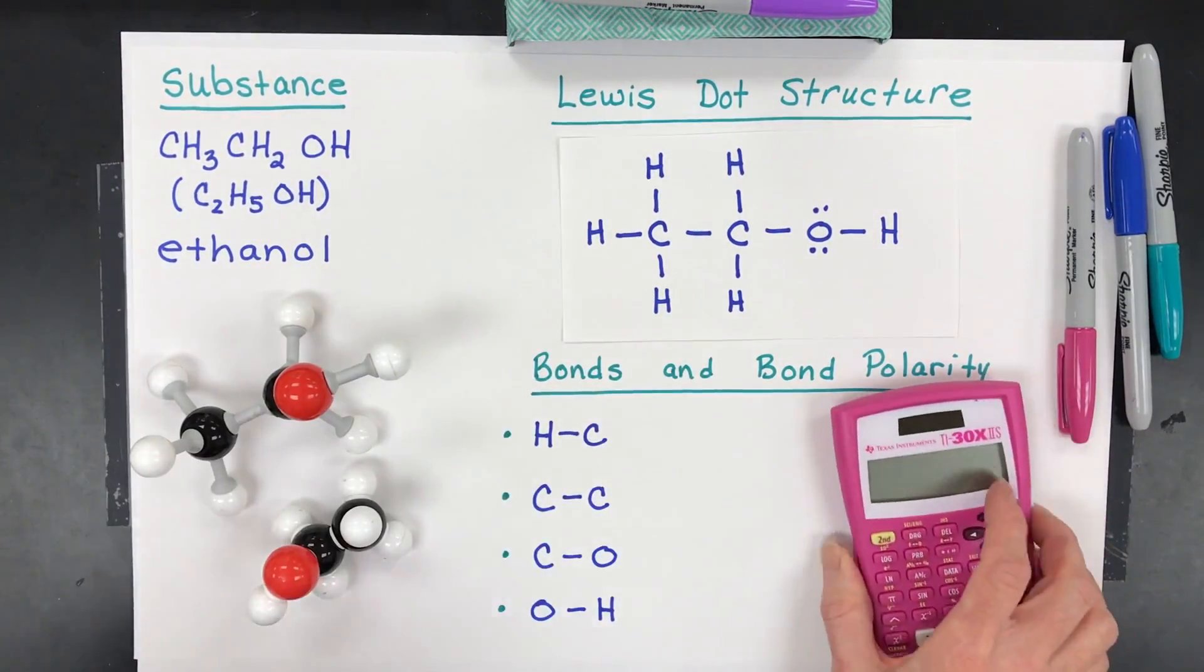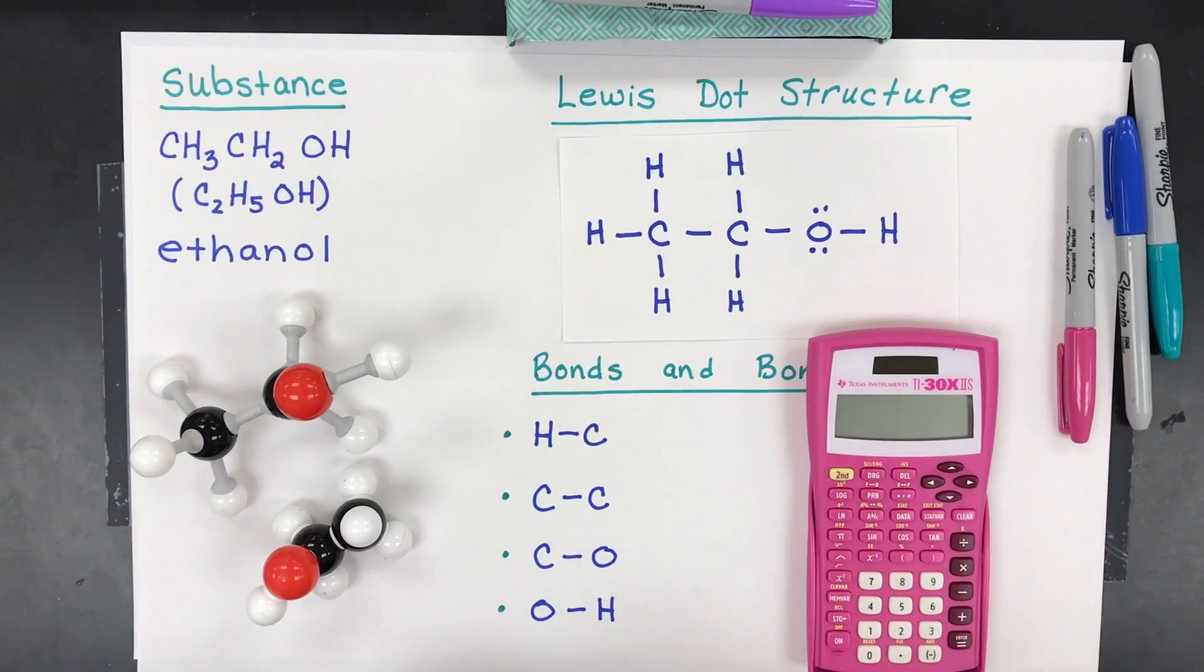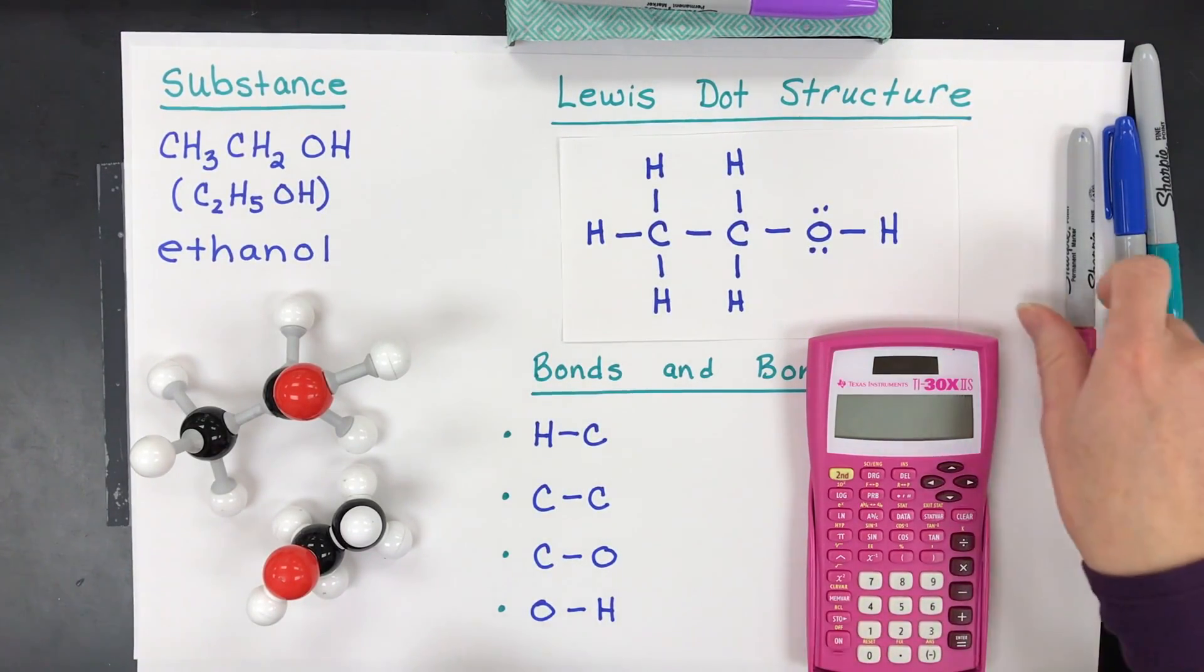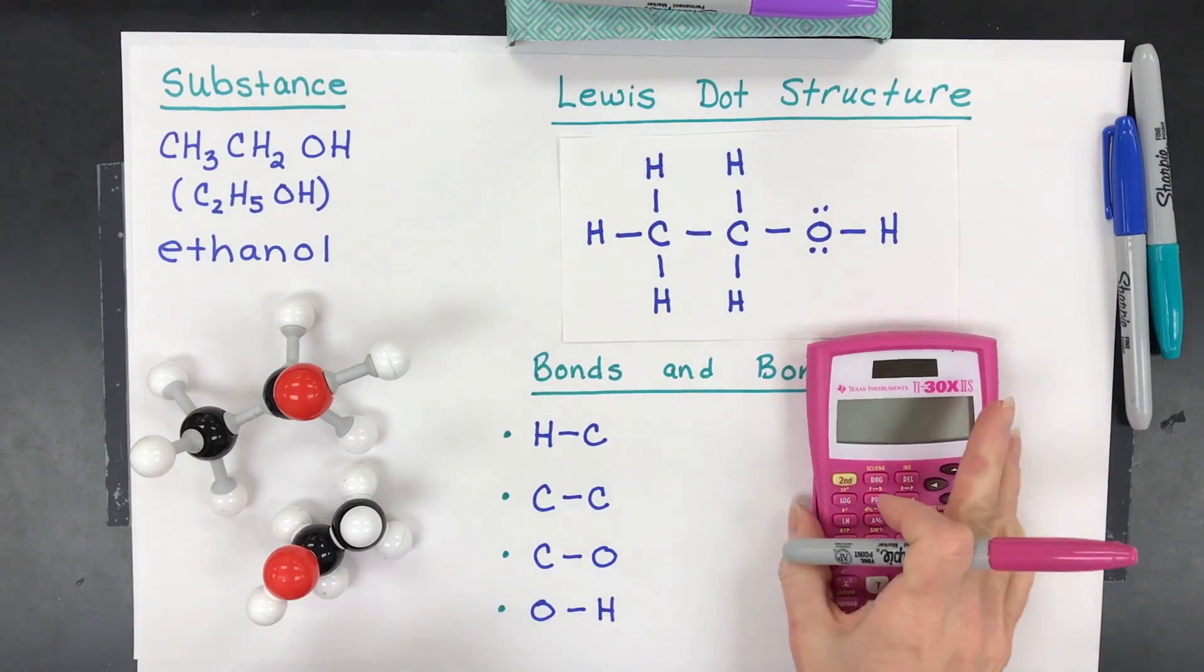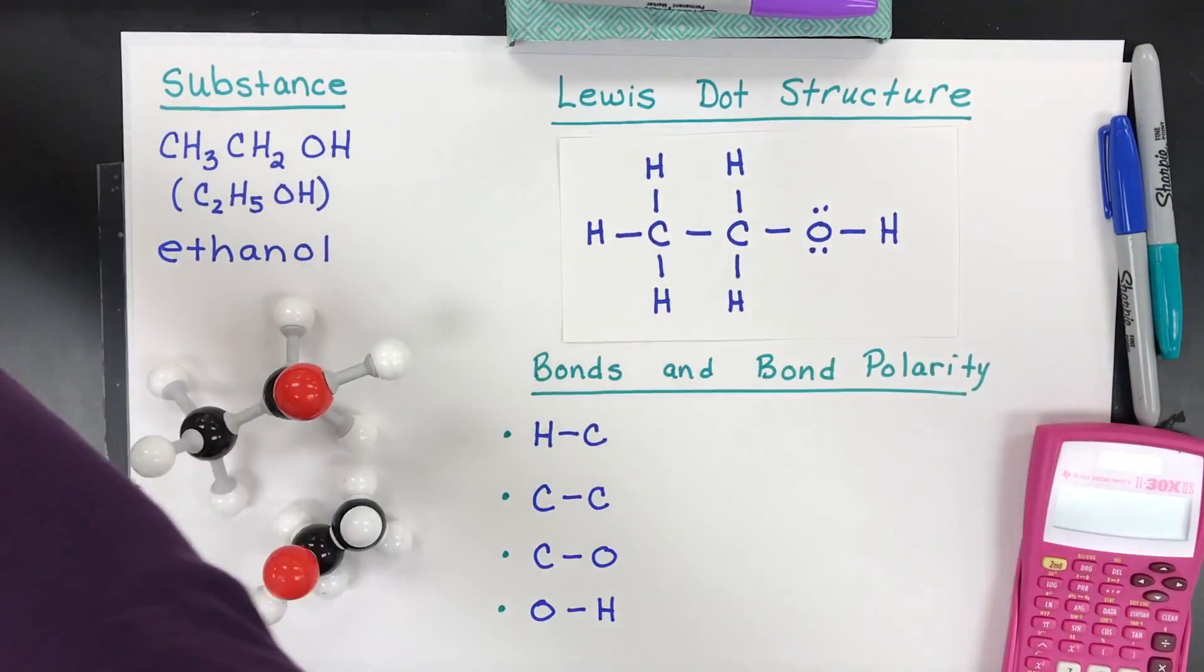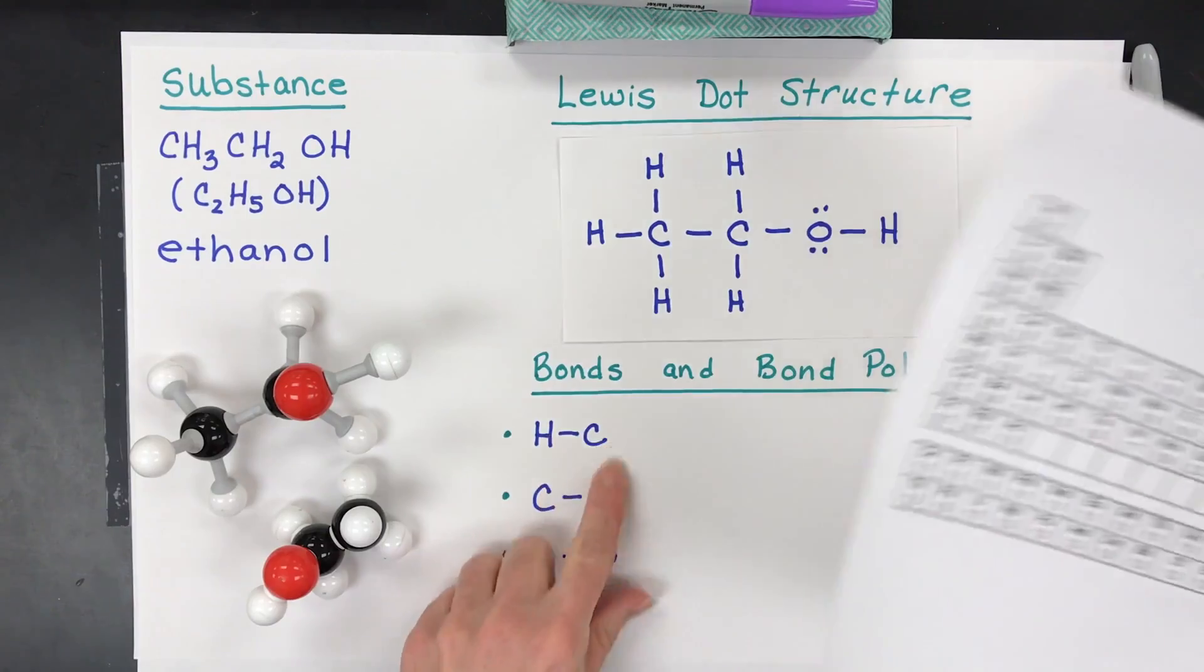If you are worried you can't subtract, grab a calculator so that you can put the numbers in so that you don't make a silly mistake on just subtracting because that's all we're going to do. So grab the electronegativity table and find the atoms you're looking for. Hydrogen, carbon. Here we go.